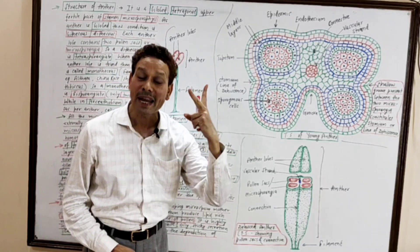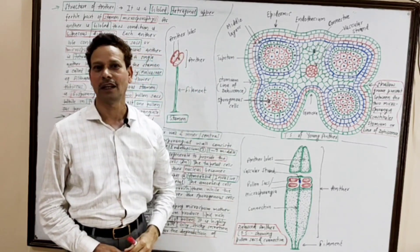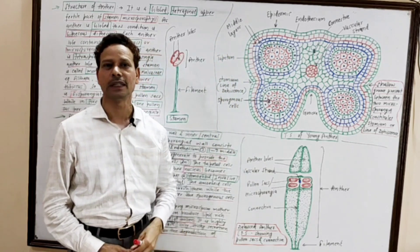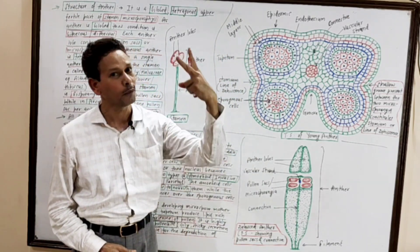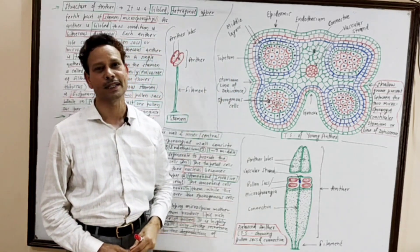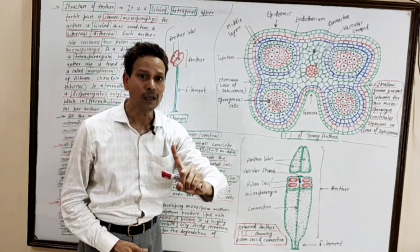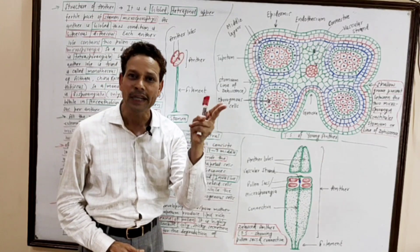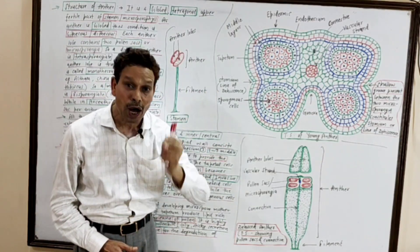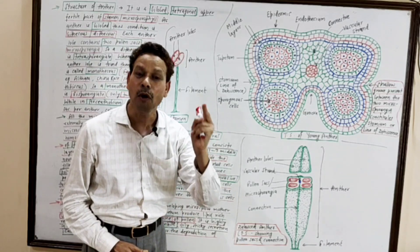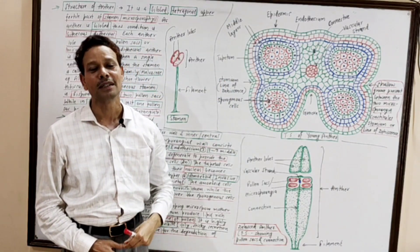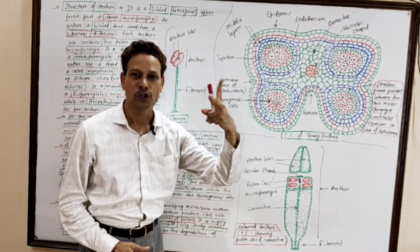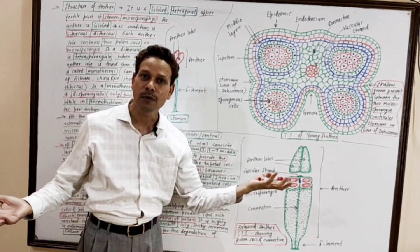But in an anther having only one anther lobe — that is the characteristic of family Malvaceae — each anther has one lobe instead of two. So the condition is monothecous. In one anther lobe, there are only two microsporangia. So in the case of family Malvaceae: one anther lobe, monothecous, and only two pollen chambers — the condition is bisporangiate. But generally, two anther lobes and four pollen chambers — it is tetrasporangiate.